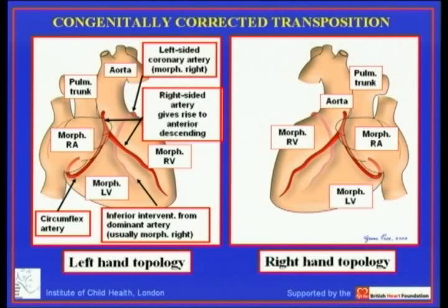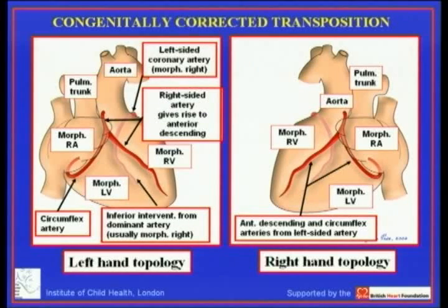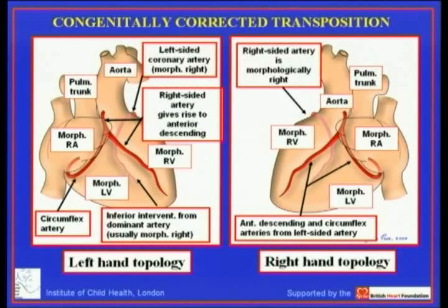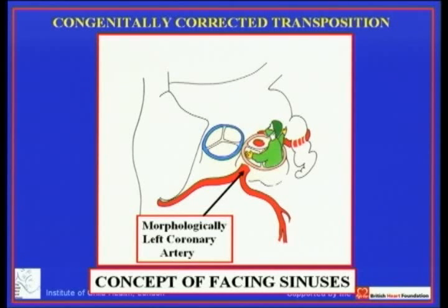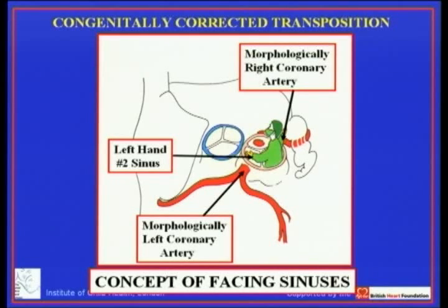With right-hand topology the coronary distribution resembles the usual heart. The ventricular mass in congenitally corrected transposition with mirror imagery is right-handed, so the anterior descending and circumflex arteries arise from a left-sided main stem and the right-sided artery is morphologically right. Fortunately, the concept of facing sinuses does not cause problems here: the morphologically left coronary artery from sinus 2 is still to the left, and the morphologically right coronary artery from sinus 1 is to the right.